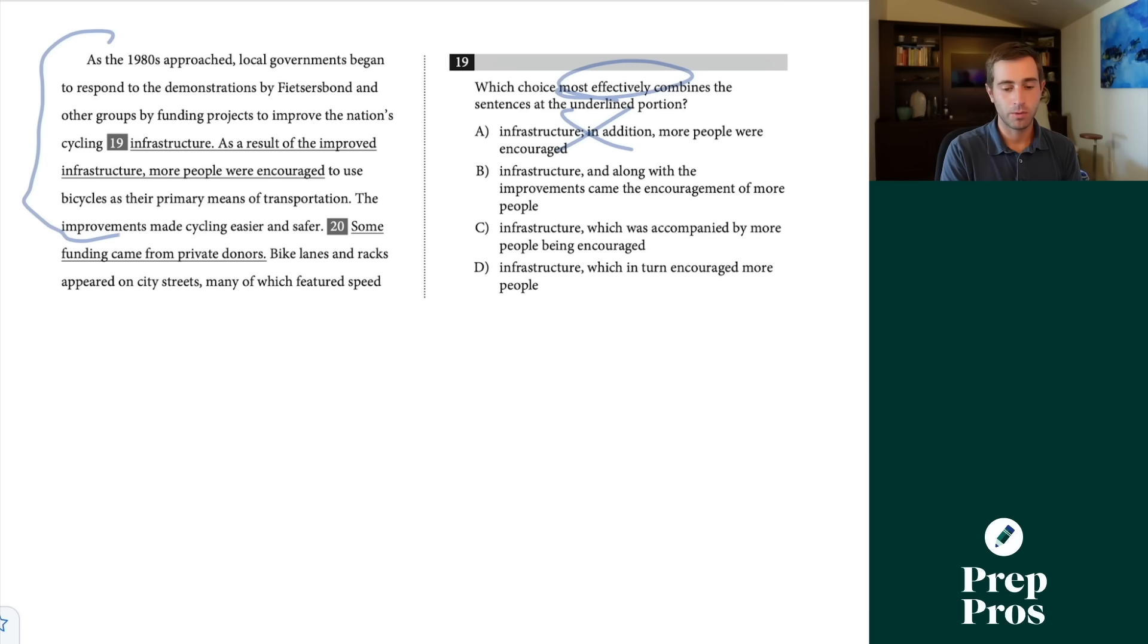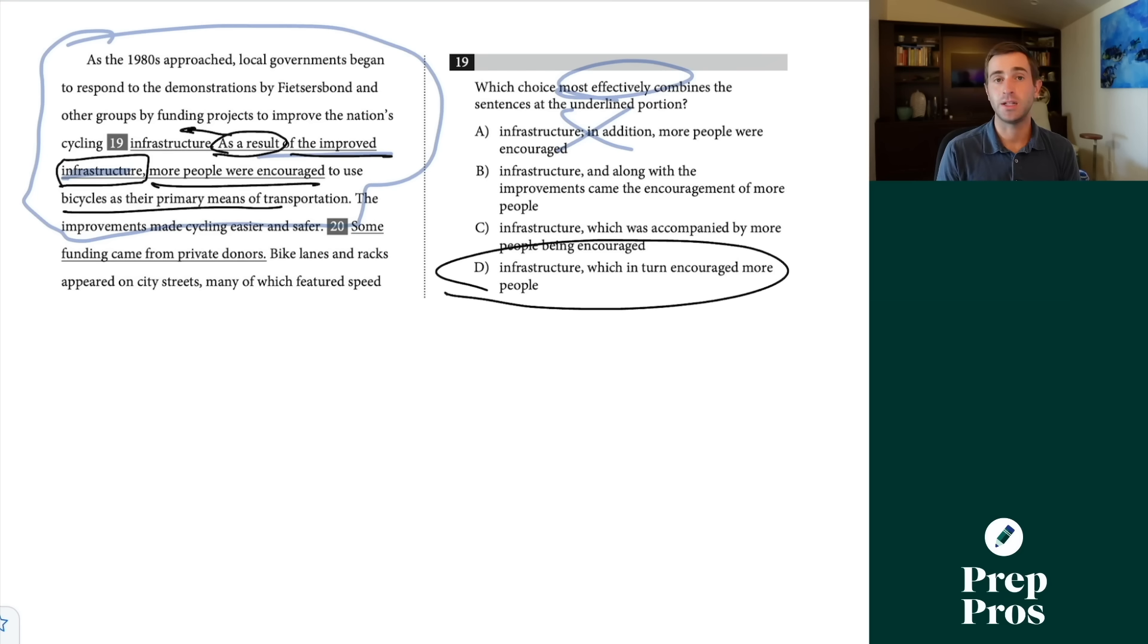Here, I'm always looking out for what is being repetitive. As the 1980s approached, local governments began to respond to the demonstrations by funding projects to improve the nation's cycling infrastructure. As a result of the improved infrastructure - this seems very repetitive. More people were encouraged to use bicycles as their primary means of transportation. The main idea is we're saying because of this, this happened, but this part was redundant. I can see that D is giving the same meaning, doing it in a nice short way. We eliminate our semicolon. Each of these other ones is unnecessarily wordy. That gives us a really easy way to pick up some points on test day.